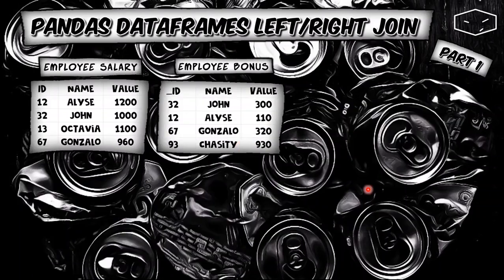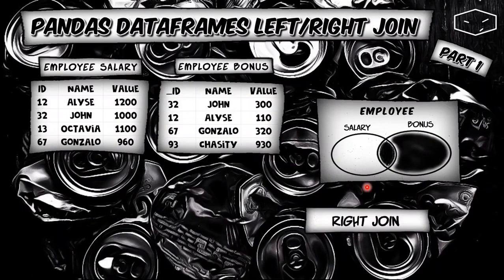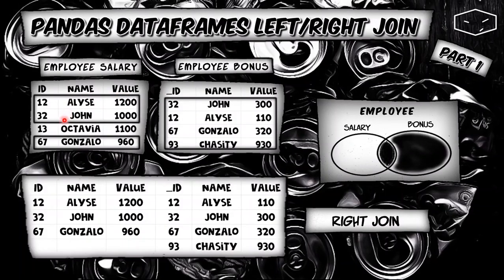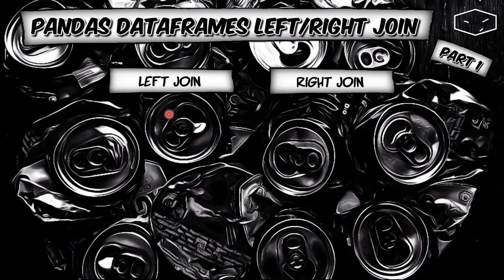A right join is almost the same thing. It is represented like this — we take all the rows from the right side and join with the rows that exist in the left side. As you can see, Shazity doesn't have any value here because she doesn't appear in the left data frame.